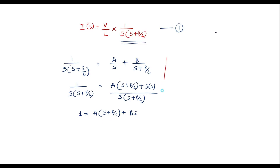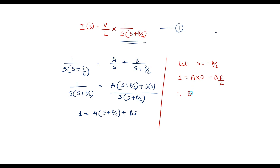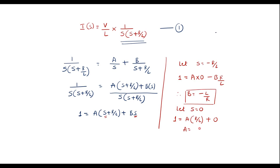Now we will try to find the values of A and B. Let s equal minus R/L: the term A·(s + R/L) becomes zero, and we get 1 equals B·(−R/L), therefore B equals −L/R. Similarly, let s equal zero: the B·s term becomes zero, and we get 1 equals A·(R/L), therefore A equals L/R.